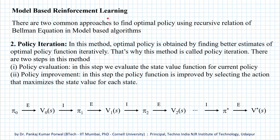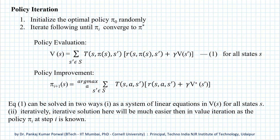The second model-based reinforcement learning approach is policy iteration. In policy iteration, the optimal policy is obtained by finding better estimates of the optimal policy function iteratively — that's why it's called policy iteration. There are two steps: first, policy evaluation, where we evaluate the state value function for the current policy; and second, policy improvement, where we improve our policy using that estimate. We begin by initializing the policy π0 randomly.